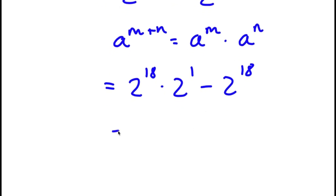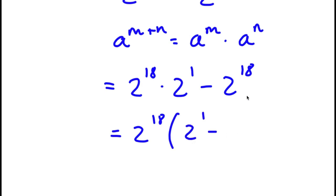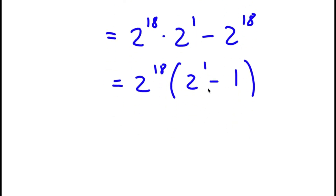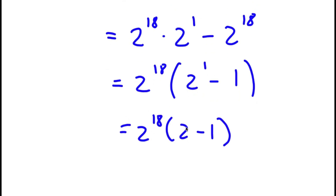From here, I can go ahead and factor out 2 to the power of 18. So I have 2 to the power of 18 times 2 to the power of 1 minus 1. Now, 2 to the power of 1 is simply equal to 2, so I have 2 to the power of 18 times 2 minus 1.